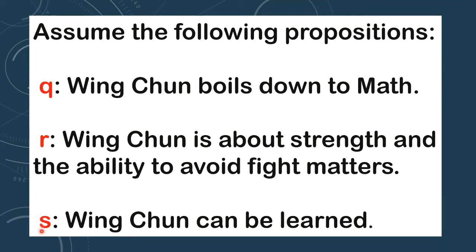Lastly, we have proposition S: Wing Chun can be learned. So we're going to connect these three propositions to make a compound proposition, and then we're going to determine the truth value of the compound proposition in different scenarios. I hope you already watched my previous video about the truth value of a proposition — I will give the link of that video in the i-button above.